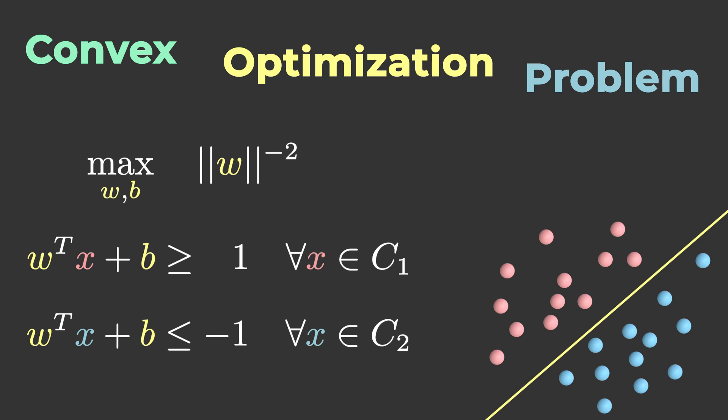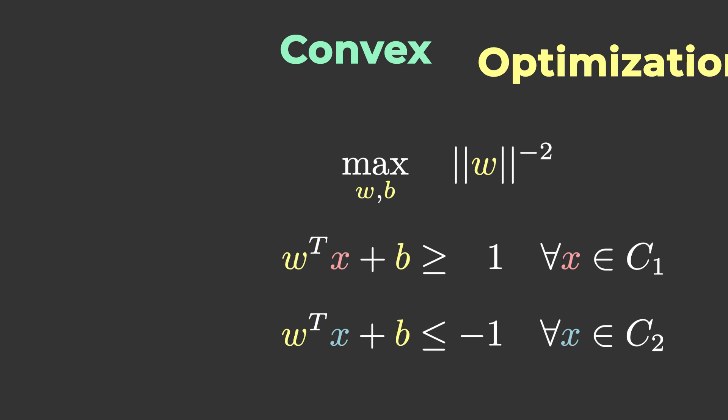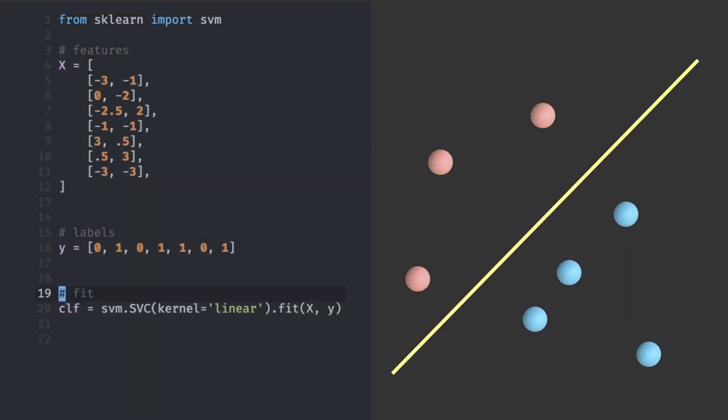In practice, you don't have to worry about the implementation details of this optimization problem. Using SVM can be as simple as loading a Python library, preparing your training data, feeding it to the fit function, and calling predict to assign the correct category to a new object.